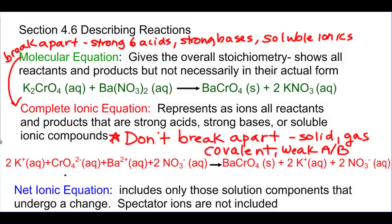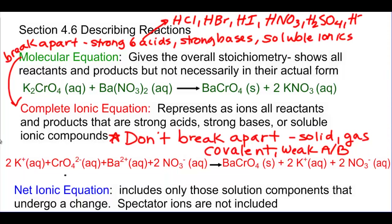Remember, going from molecular to complete ionic requires that you know who your strong bases are: group 1 with OH, and the bottom 4 of group 2 with OH. It also requires that you know your strong acids. They are HCl, HBr, HI, HNO₃, H₂SO₄, and HClO₄. Those are your strong acids. If it's one of those, you break it apart.